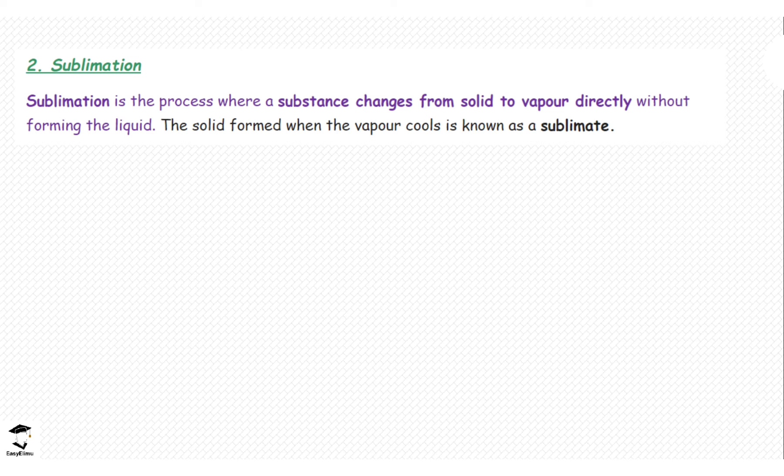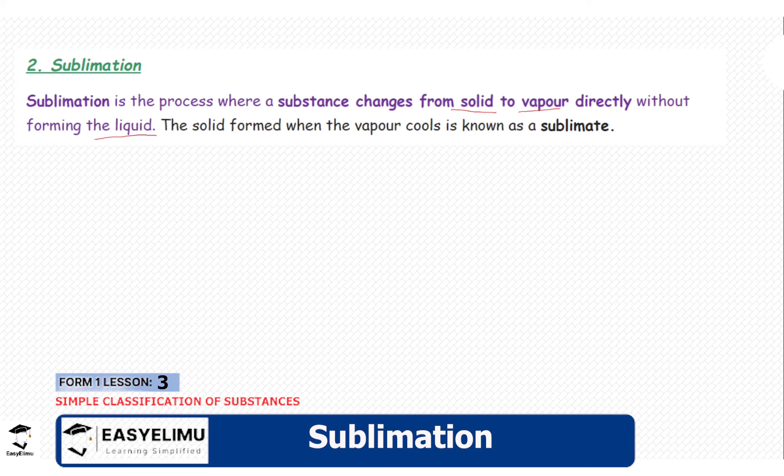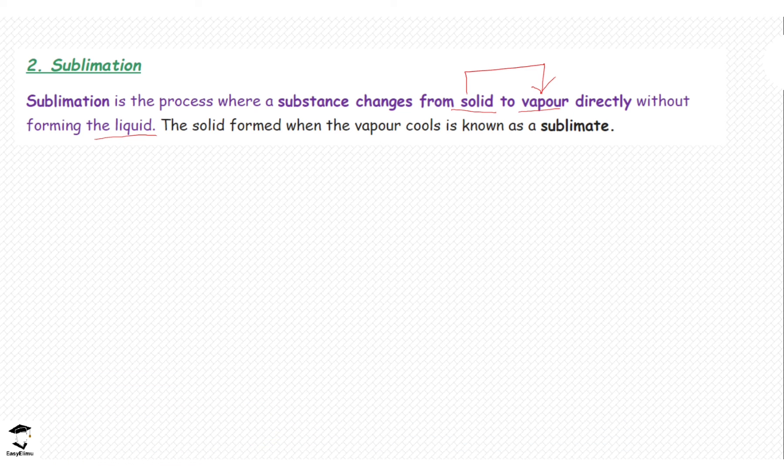So what is sublimation? Sublimation is a process where a solid changes into vapor directly without forming a liquid. So if you are looking at physical changes, this substance is changing from solid to gaseous state directly. It's not going to pass through a liquid.